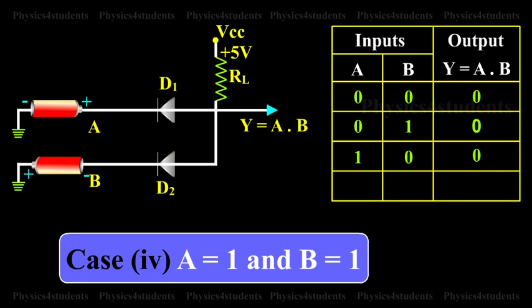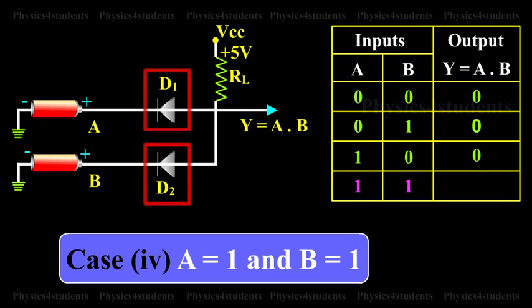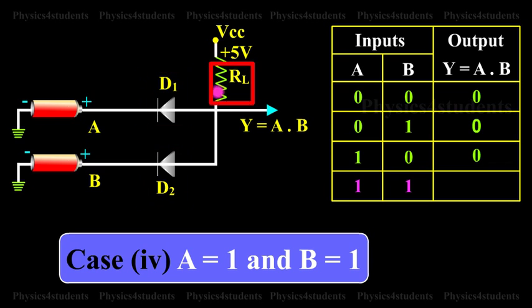Case 4: A is equal to 1 and B is equal to 1. In this case, both the diodes are not conducting. Since D1 and D2 are in off condition, no current flows through RL. The output is equal to the supply voltage. Therefore, Y is equal to 1.